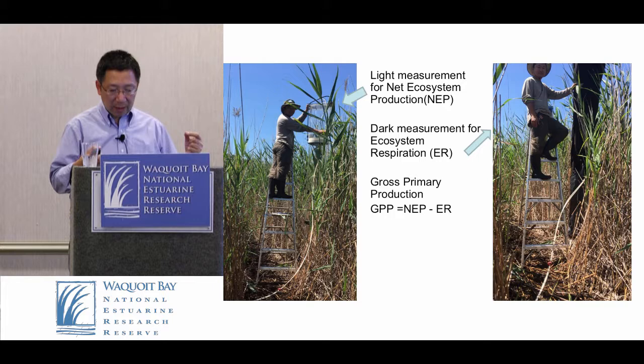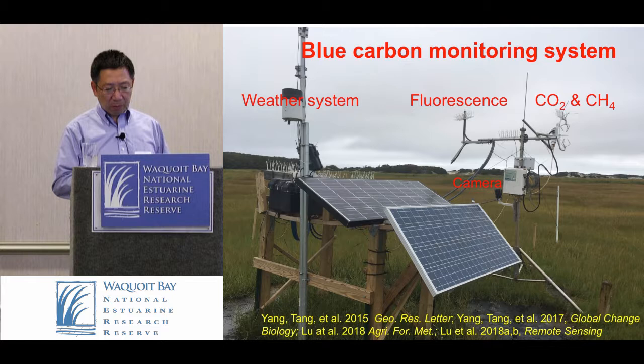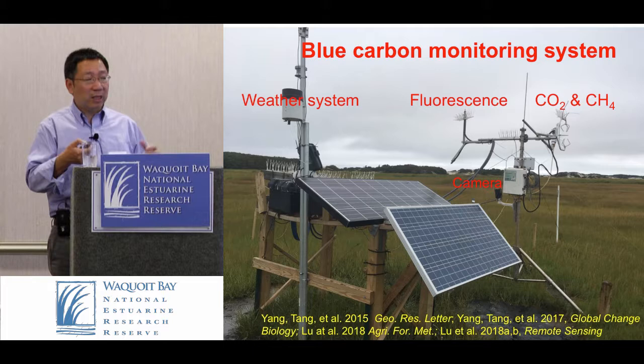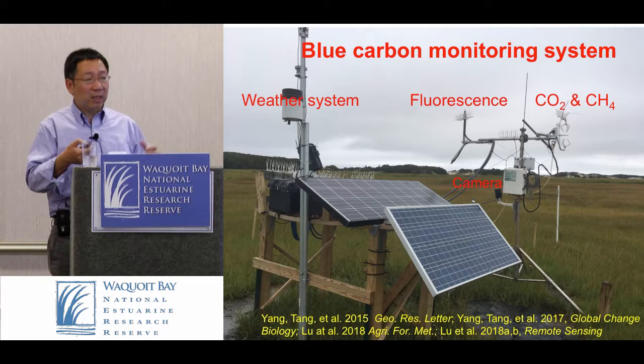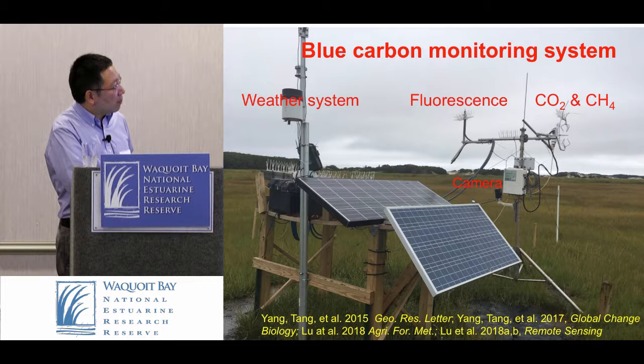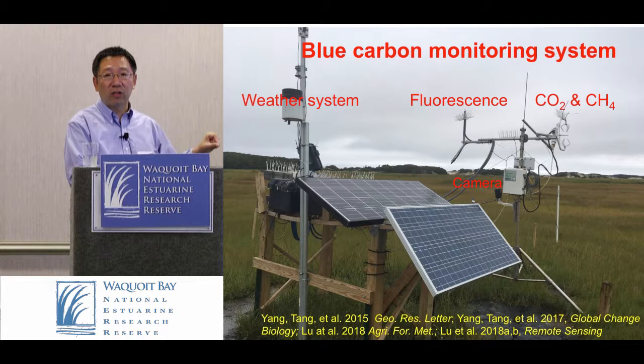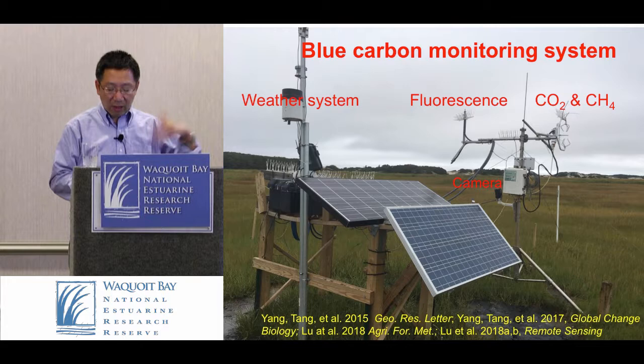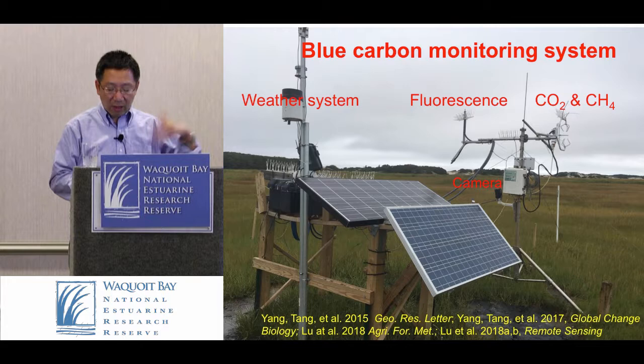We also try to understand the gross emission of respiration, which is carbon out. And recently, since last year, we put even newer technology — an eddy covariance system measuring carbon dioxide and methane simultaneously and automatically. We don't need to go to the field; we put the system there and automatically get the data. We now get some continuous data fixed into the salt marsh. We also have another system in phragmite. We also put some newer fluorescence systems that allow us to measure photosynthesis. You can see that our project's technology and methods are also evolving over time.